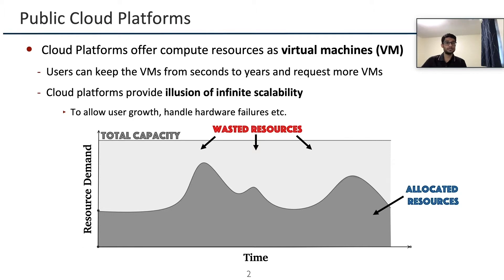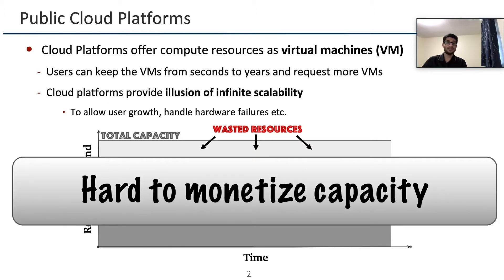Public cloud platforms like AWS, GCP, and Azure offer compute resources to users as virtual machines or VMs. Users can acquire or release these VMs at any time. Cloud platforms allow users to keep these VMs from seconds to years, and also enable users to request more VMs later. In order to enable user growth and handle hardware failures, cloud platforms provide this illusion of infinite scalability, meaning they always have some unallocated resources. Hence, it is hard to monetize the capacity in cloud platforms.